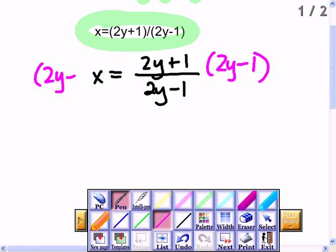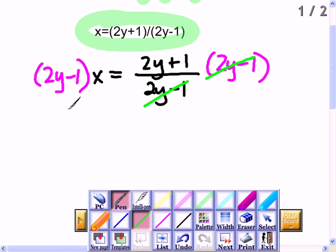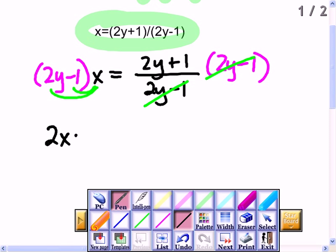Which will cancel this out. And I'll distribute on the left side. So I will have 2xy minus x is equal to 2y plus 1.